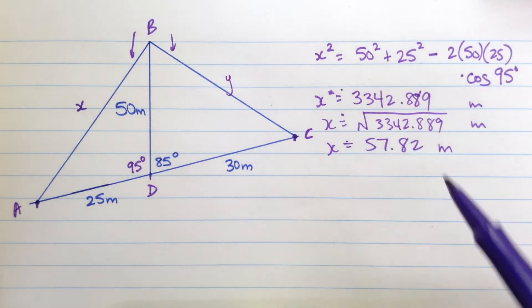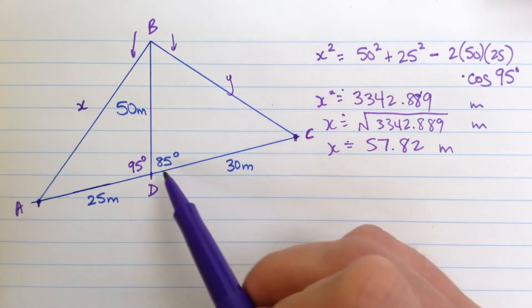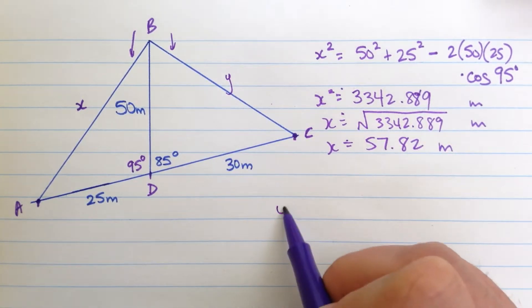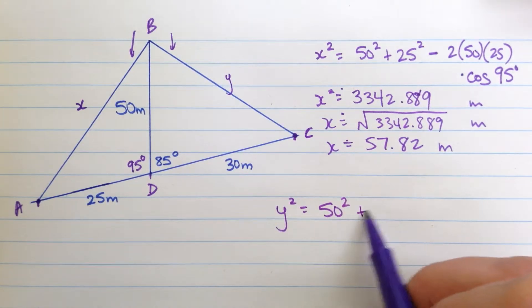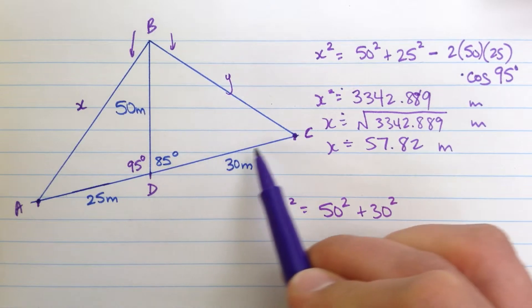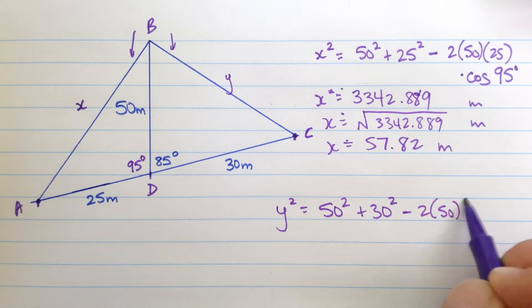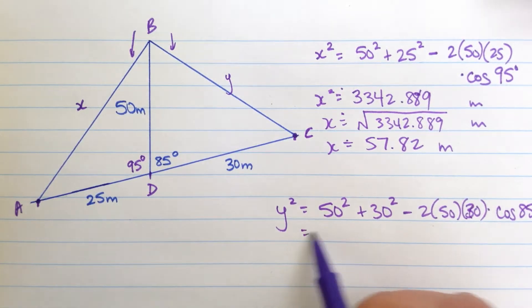Now let's find this side here. I'm going to call that side y. And this one I would think is not going to be the largest because this is only, well it could be the largest, 85 degrees. Let's see. Y squared then, once again, is the square of the other two sides added up. 50 squared plus 30 squared this time because that length is 30, CD, minus 2 times 50 times 30 times the cosine of the angle between them is 85 degrees. Oh, sorry, that's just a little off the page, 85 degrees.